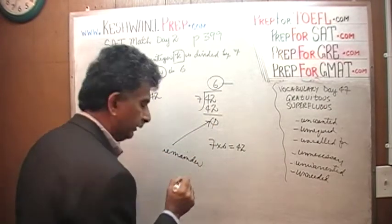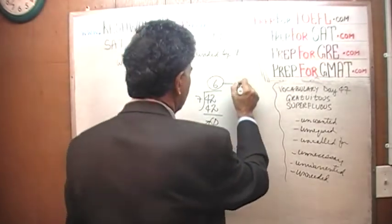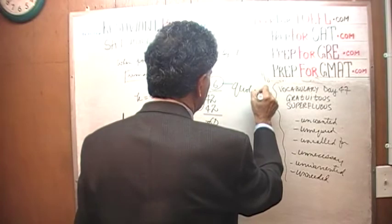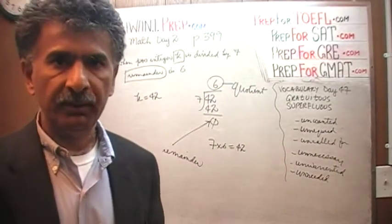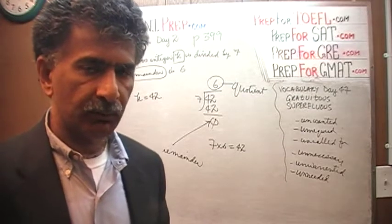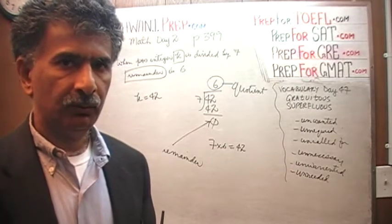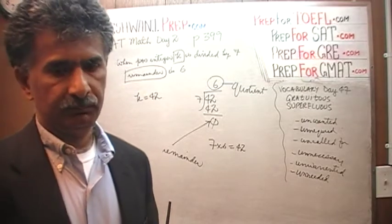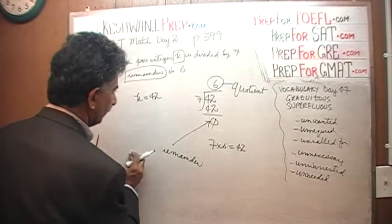Many times I have seen kids confuse this concept with quotient. 6 is the quotient. 6 is not the remainder. We have to think of the remainder. We have to think of a number which when divided by 7 is going to give us a leftover of 6. There are a couple of ways we can do that.